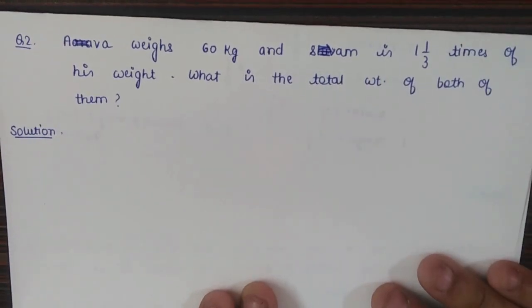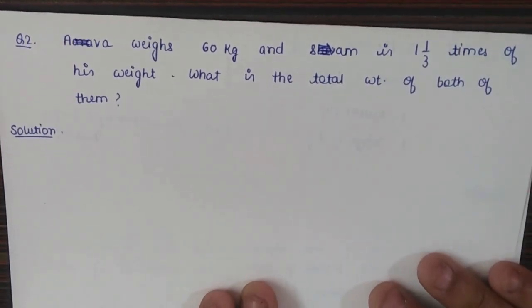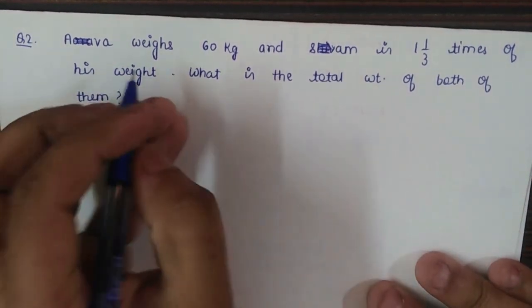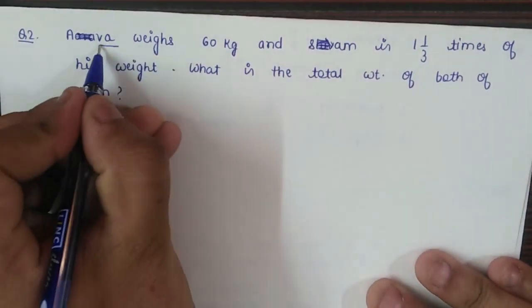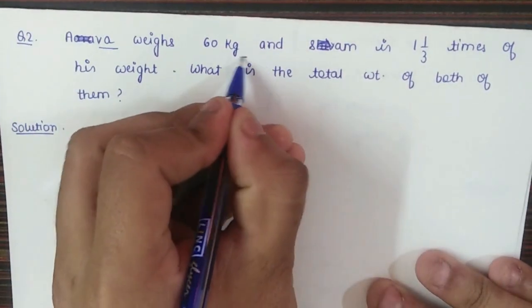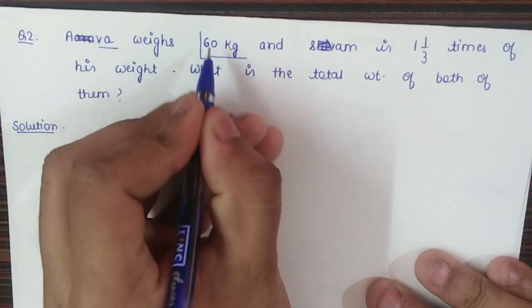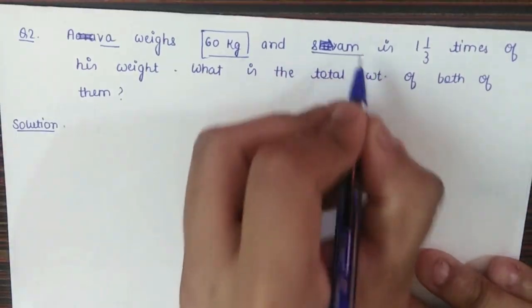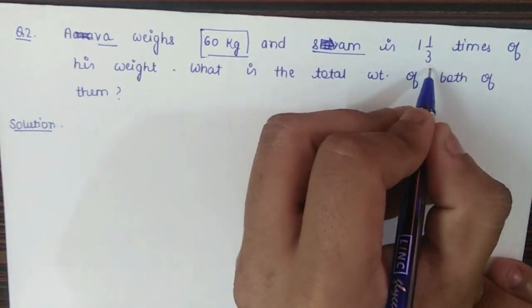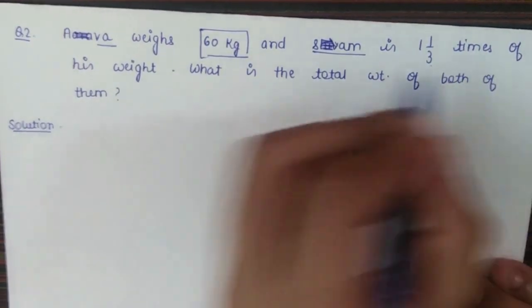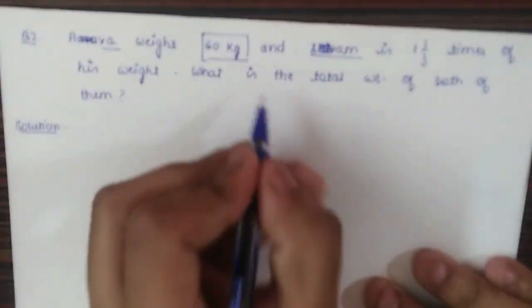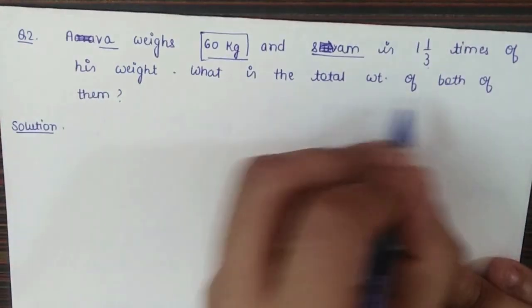Now let's look at question number two. Eva weighs 60 kilograms and Sam is 1 and 1/3 times her weight. What is the total weight of both of them?